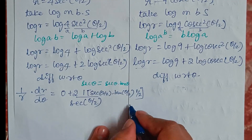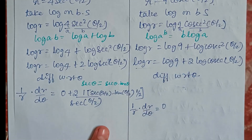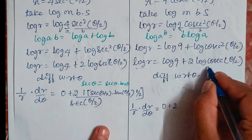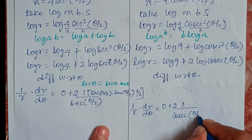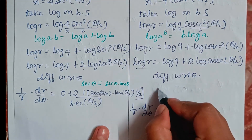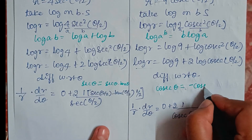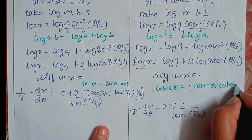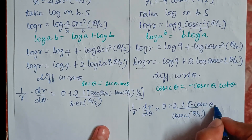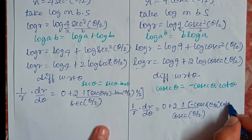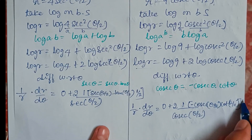For the second curve: (1/R)·(dR/dθ) = 0 + 2·(1/csc(θ/2))·(−csc(θ/2)·cot(θ/2))·(1/2), since the differentiation of csc θ is −csc θ·cot θ, and differentiation of θ/2 gives 1/2.